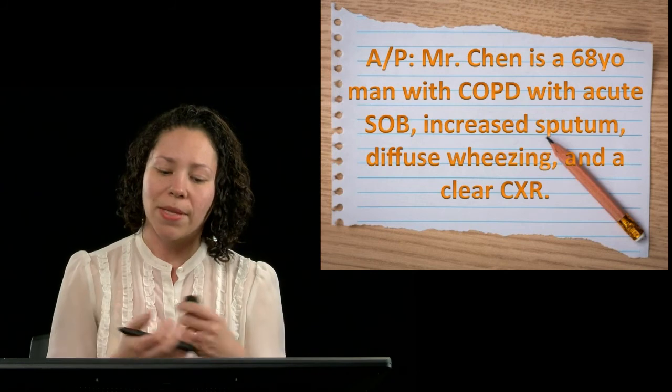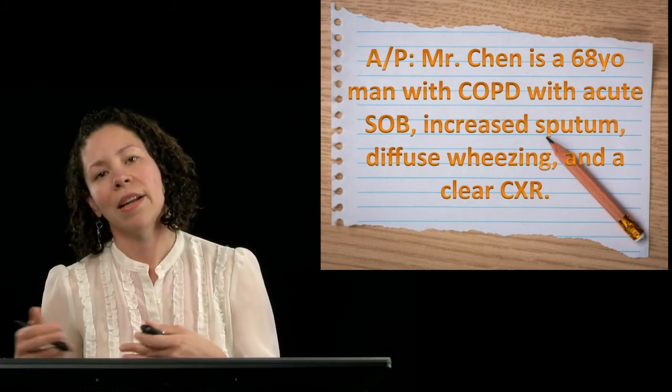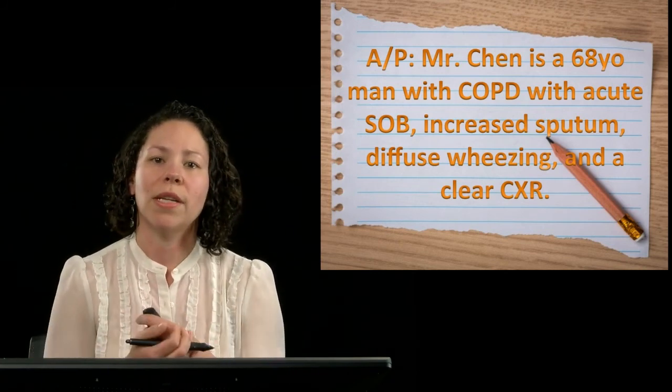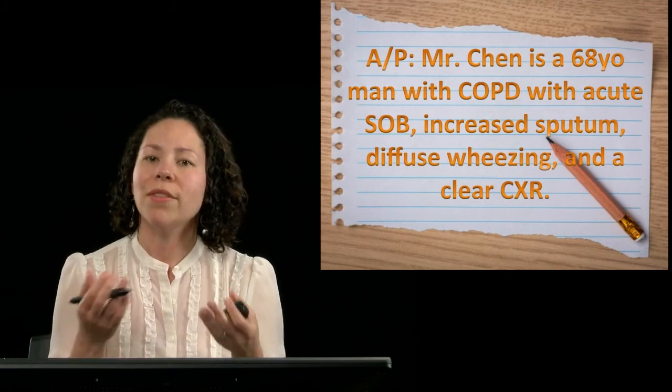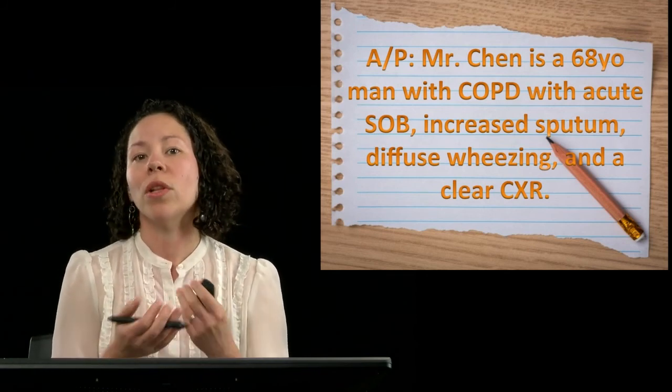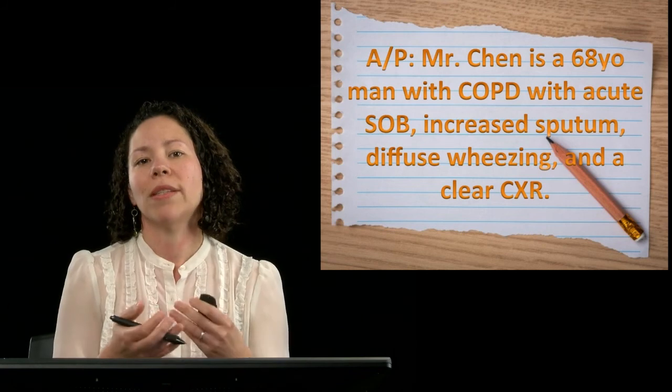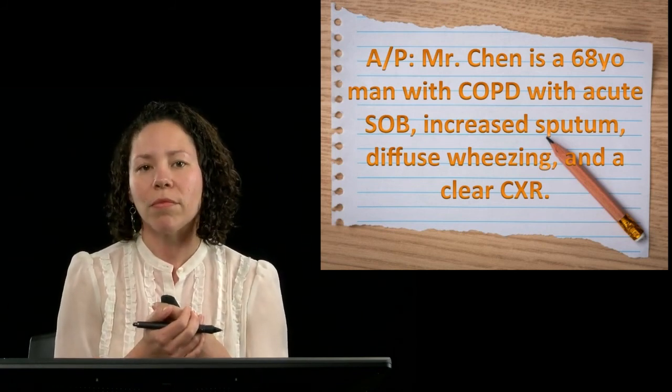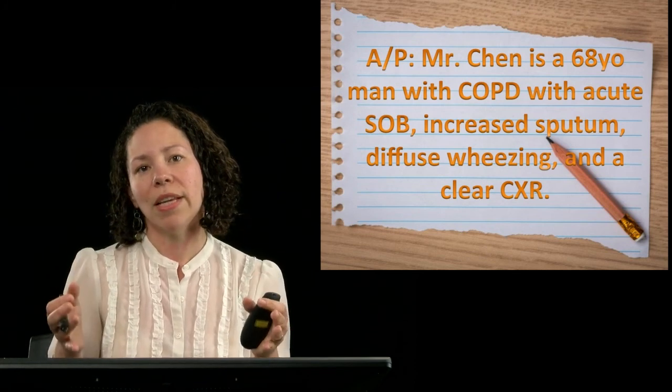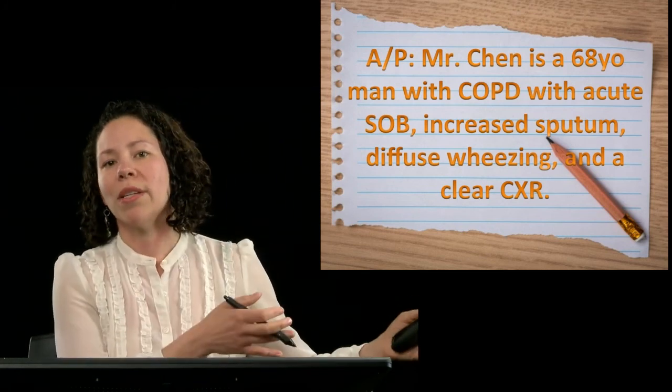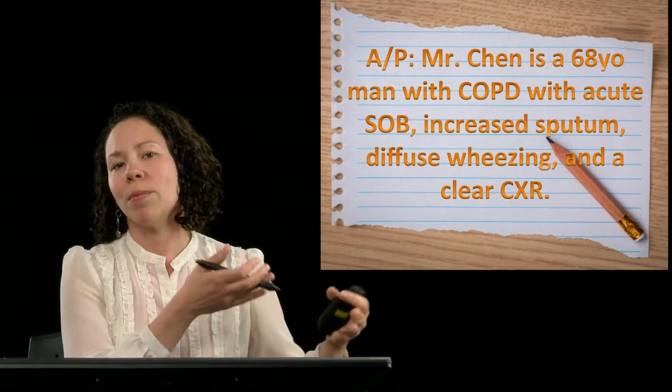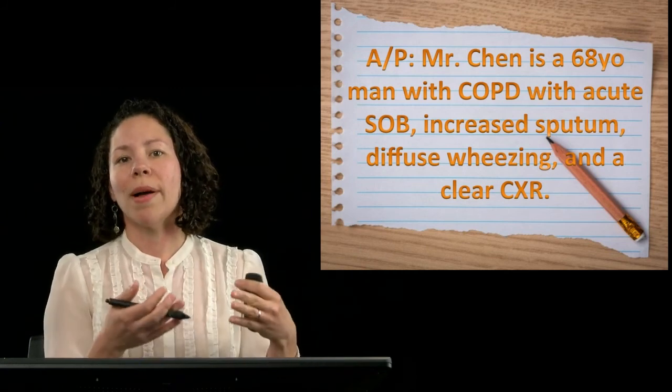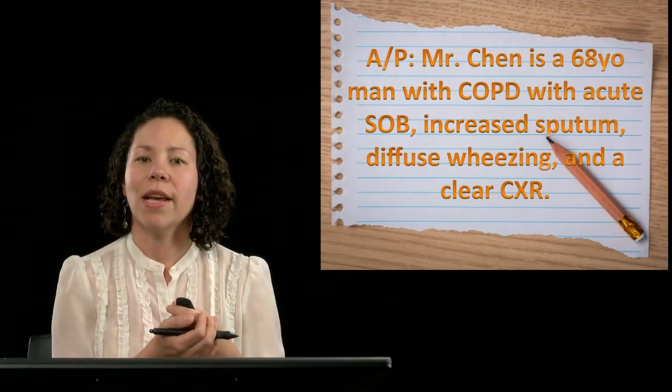So, for example, you might end up saying, Mr. Chen is a 68-year-old man, most concerning for a COPD exacerbation. Those kind of details don't really change the goal of this statement, which always is a way to set up your prioritized differential diagnosis. And remember that the point of this is different from the point of the earlier iterations of the problem representation, which were more about helping you to feed back into your history and physical exam.